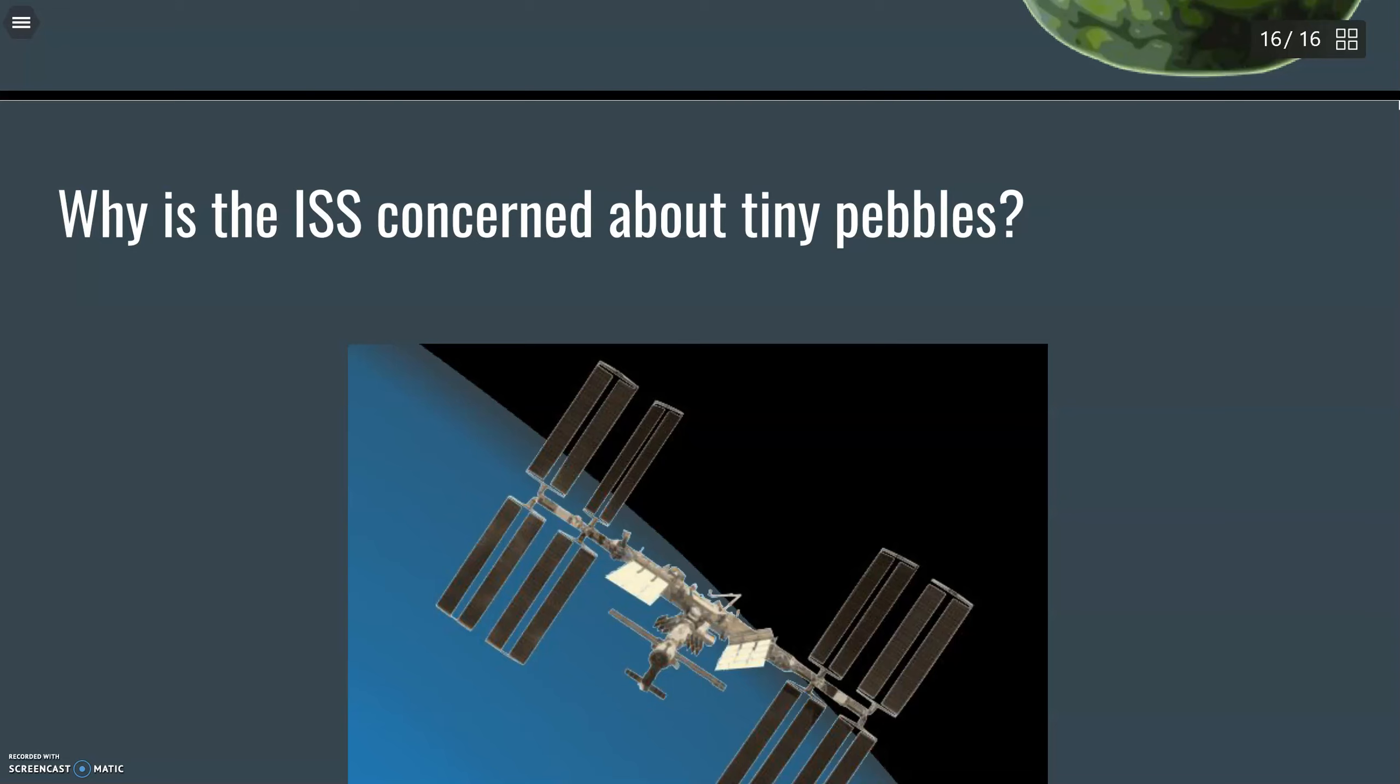So I'm going to leave you with a question that we're going to talk about next time. Why would the ISS be concerned about tiny little pebbles? If momentum is mass times velocity, and that mass is so itty-bitty for that tiny little pebble, why is the International Space Station very concerned about those tiny little pebbles? I'll leave you with that, and I'll talk to you in the next video.